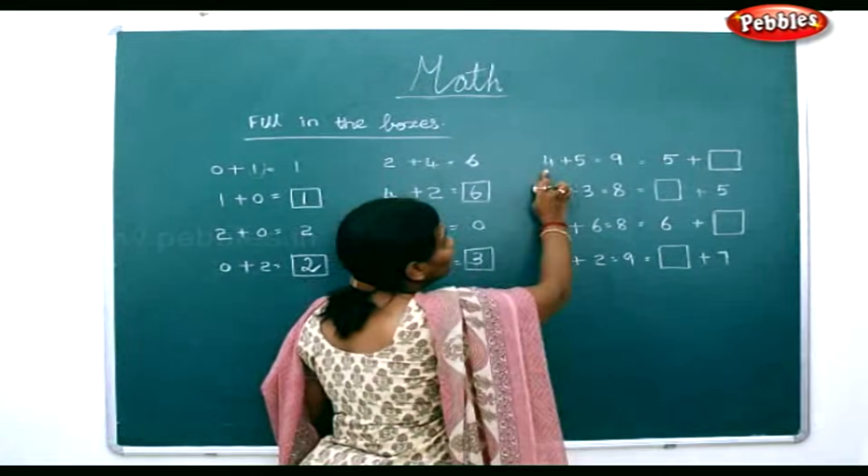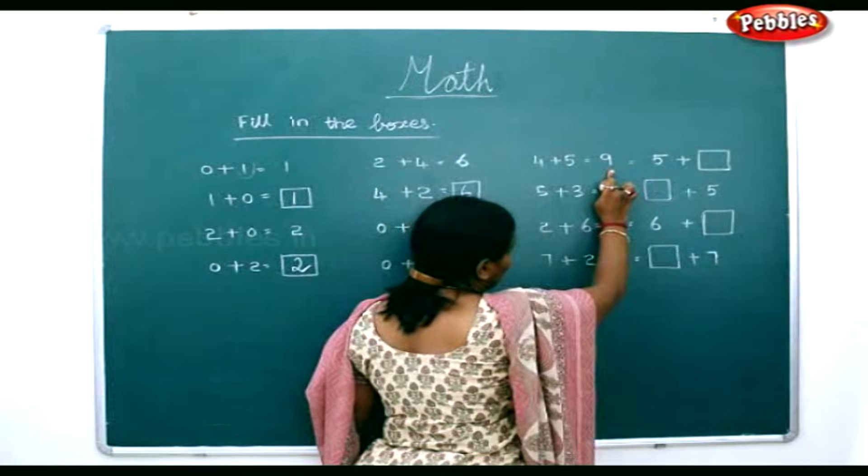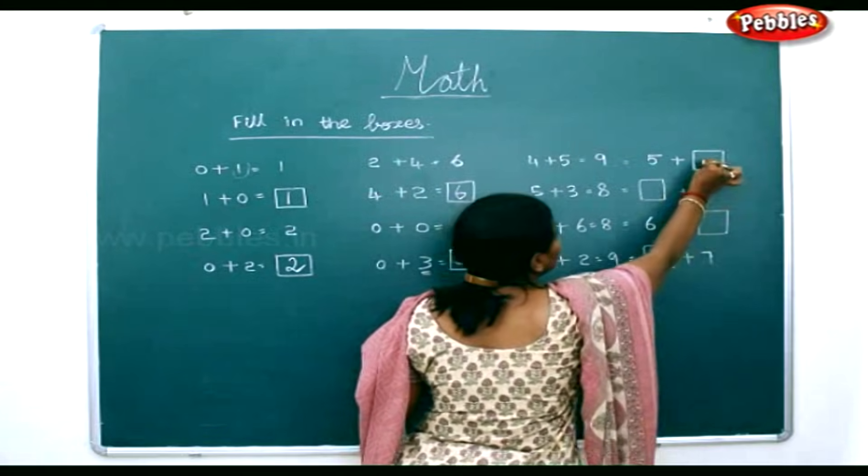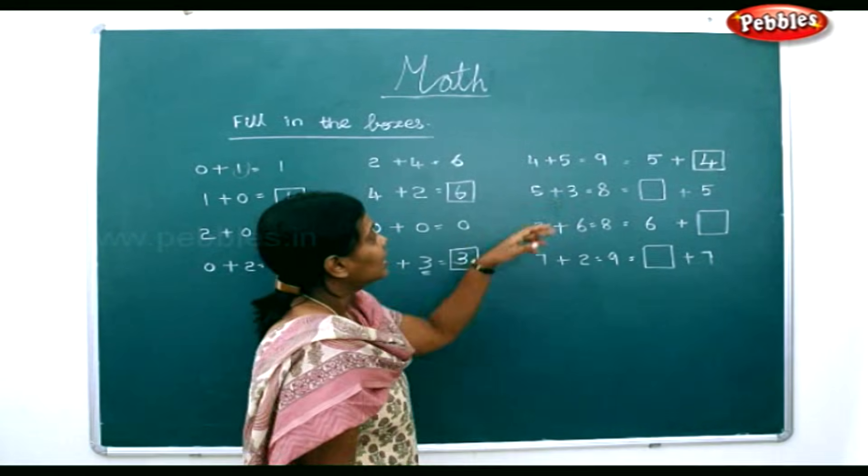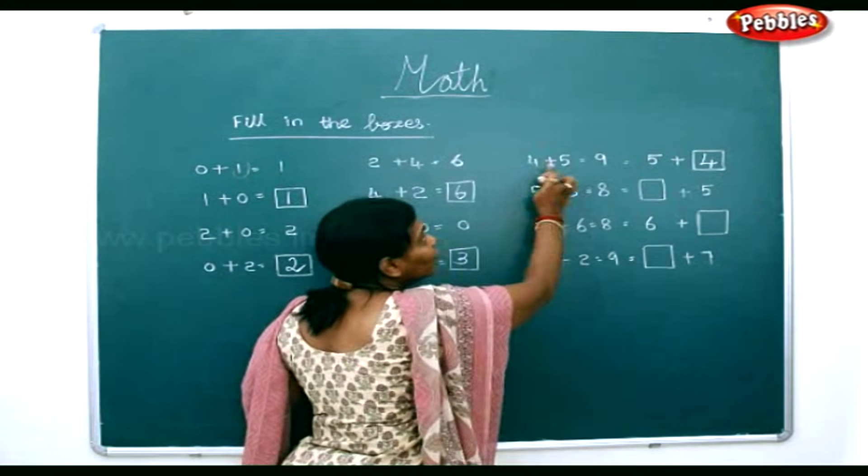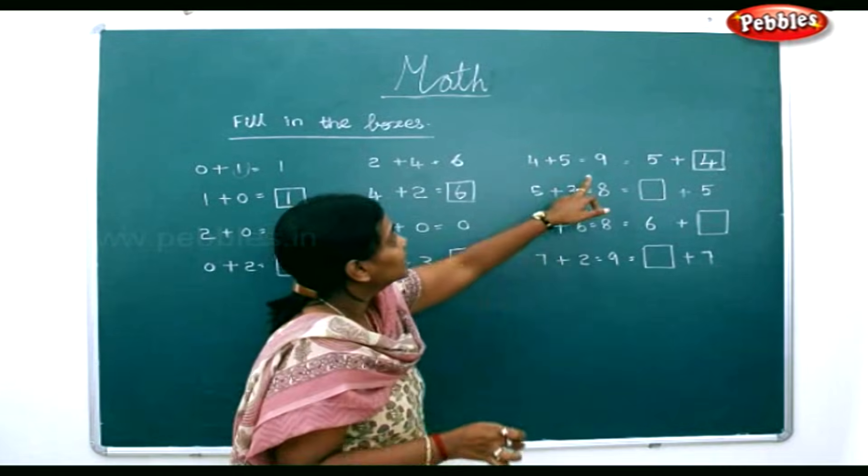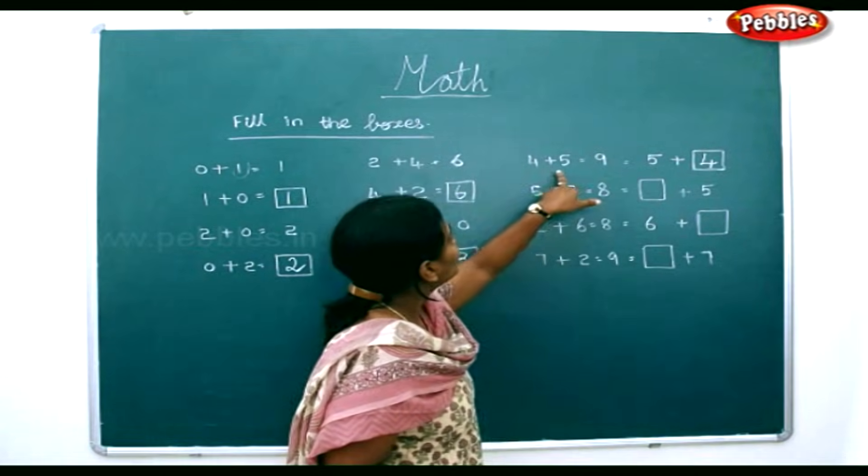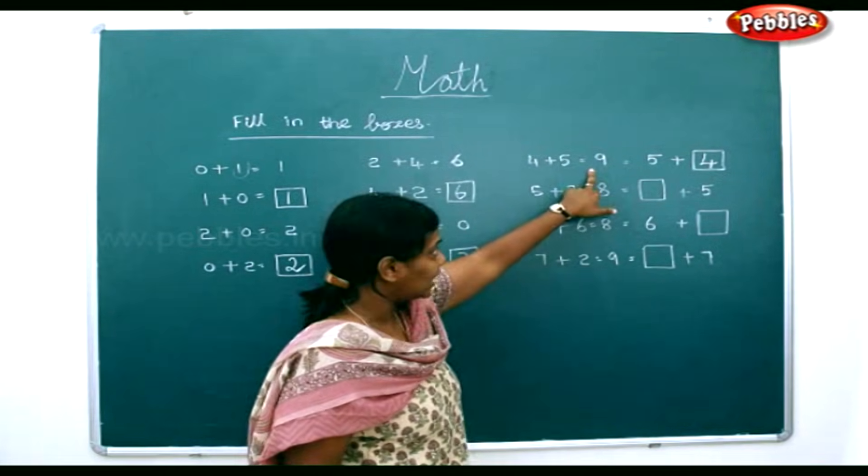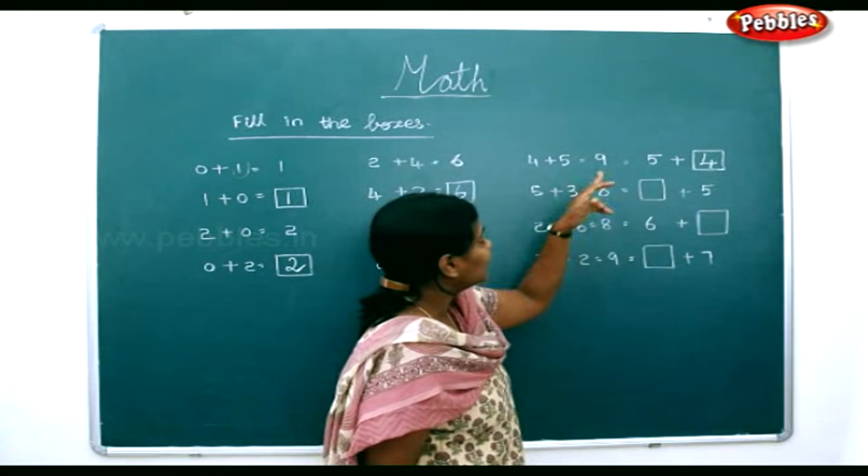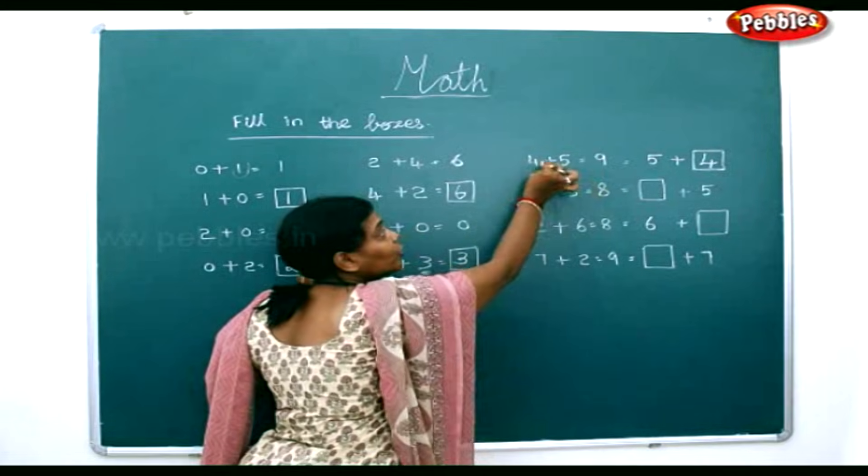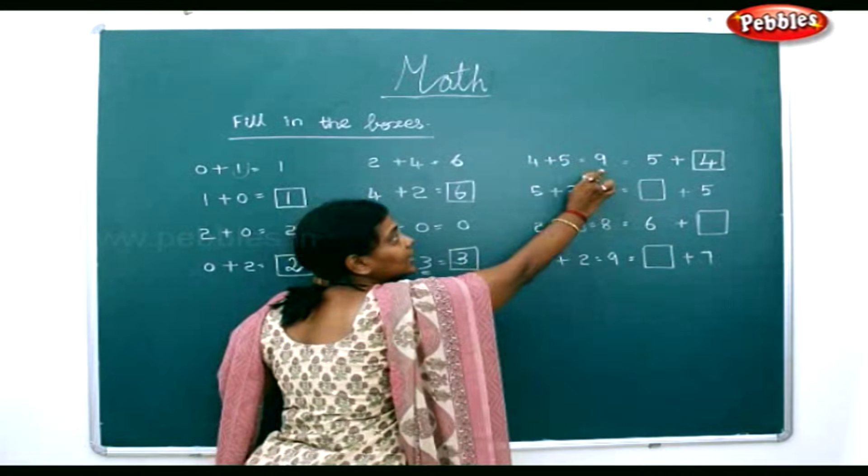Now here 4 plus 5 is equal to 9. So 5 plus 4 is also equal to 9. Even if you change the order of the numbers, the sum will be 9. You see, the addition 4 plus 5 is equal to 9, and 5 plus 4 is also equal to 9. If you change the order of the numbers, the sum will be the same.